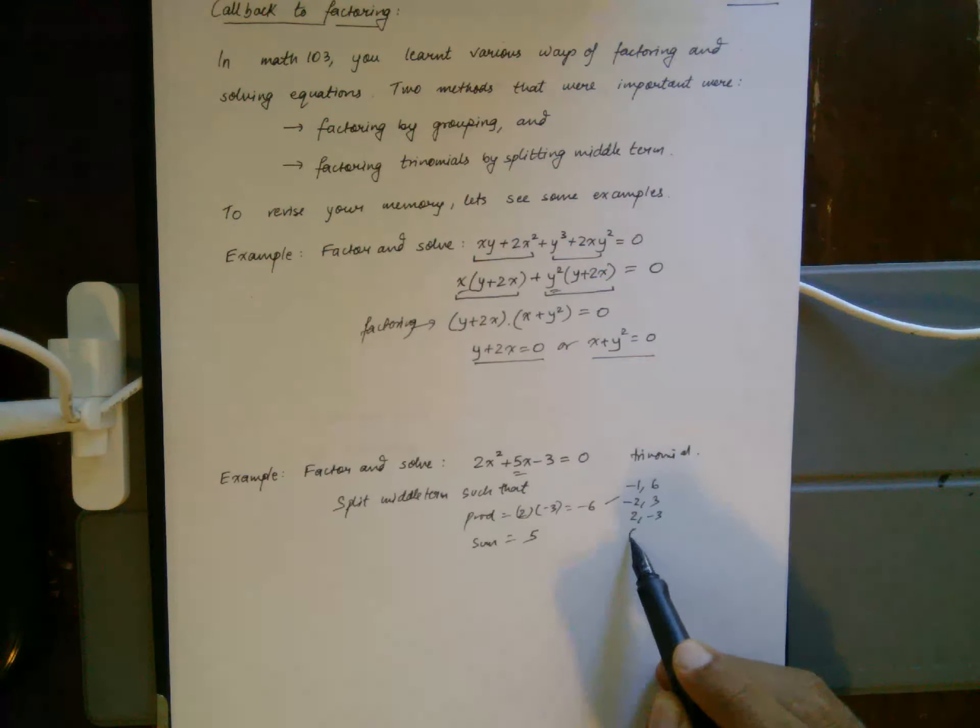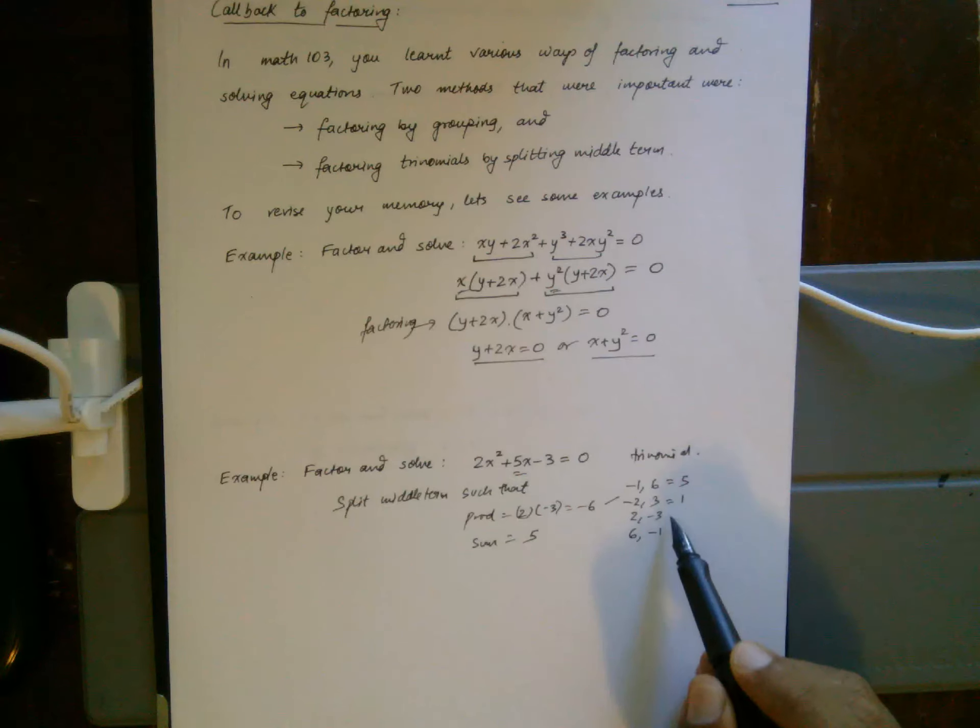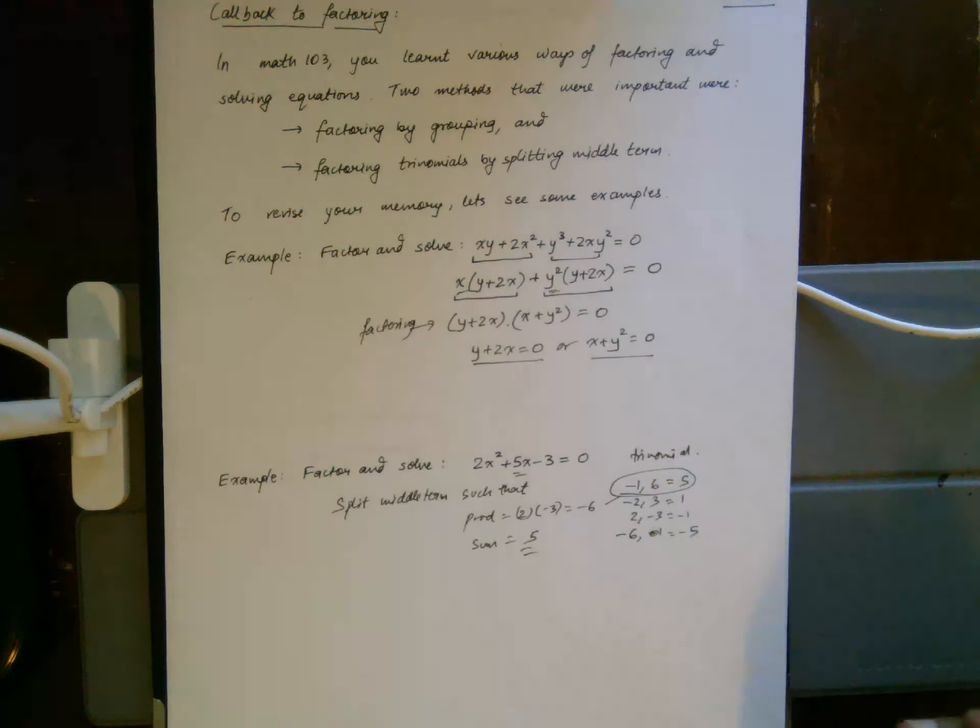Then I add these: that gives me 5, or 1, or negative 1—oh, that's the same—negative 5. I want the sum to be 5, which means that's the one that's going to work.